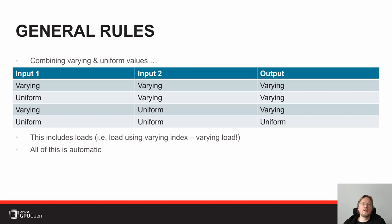We've been talking about varying and uniform. An important thing to understand is that uniform is the restrictive case — uniforms are scalars, and only combining scalars with scalars yields scalars. In all other cases, the compiler has to go to varying or vector registers. This is the whole reason for all the research about scalarization, which is about how to go back from varying to uniform. We'll get to this in a moment.